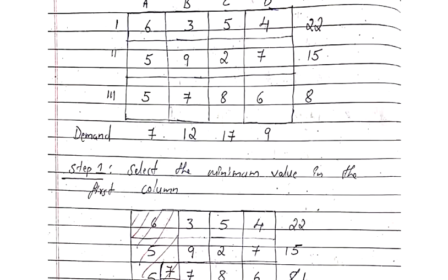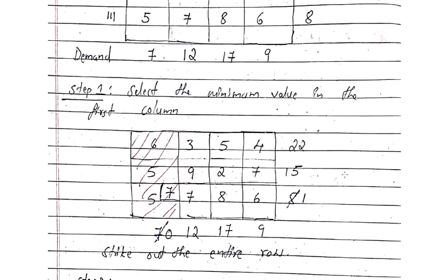Step 1: Select the minimum value in the first column. The first column has values 6, 5, and 5. There is a tie between two 5s. Whenever there is a tie, we can select any one — I am selecting the last 5. The demand for this column is 7, and the supply in that row is 8, giving an excess of 1 unit.